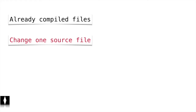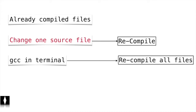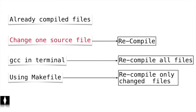Taking another scenario: say we have already compiled the source files and have an executable, and we change just one file and want to recompile. Using gcc on the command line will recompile all source files. If we have many files, build time will be high — say 10 minutes. We need a rule that recompiles only the changed files, which the makefile provides. These are the two main reasons we use a makefile.